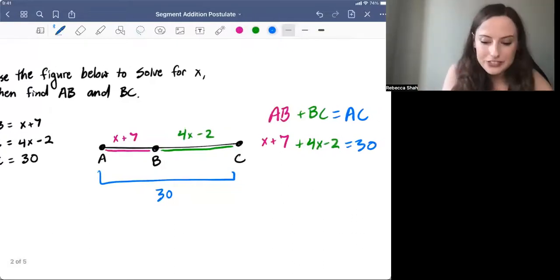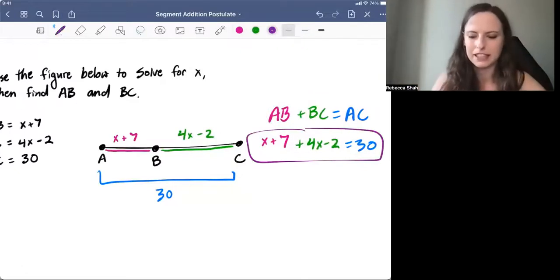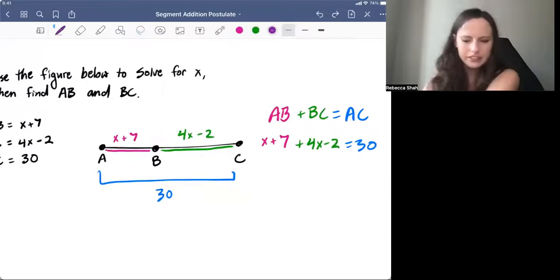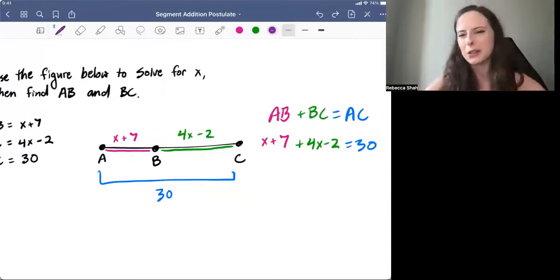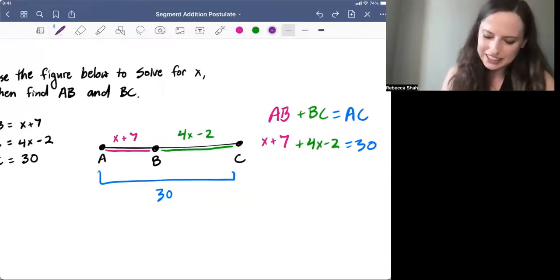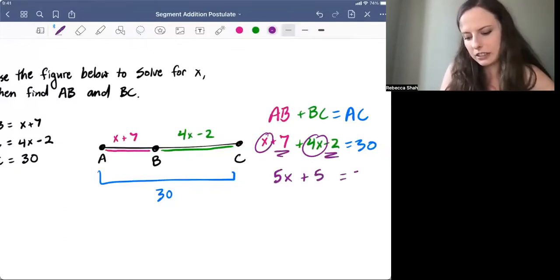Guys, setting up this equation is the hardest part of a problem like this. If you can take all those pieces, this plus this equals the third thing, if you can set up the equation, you're already halfway there. The rest of this is just using the algebra skills that we already know to solve for X. So let's see. We are going to combine our like terms. We have X plus 4X is 5X. And we also have these numbers. Seven minus two is five. And then that still equals 30.